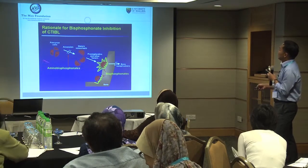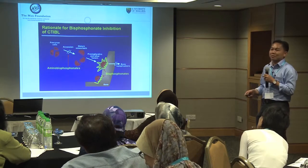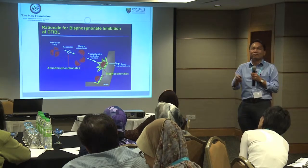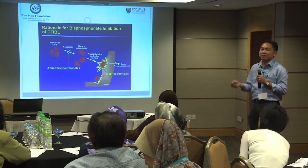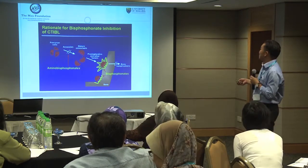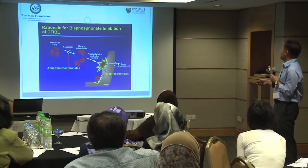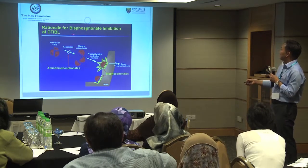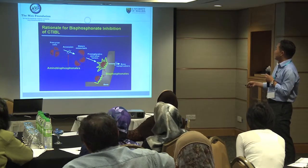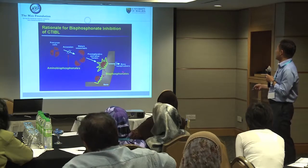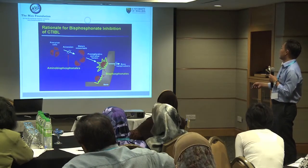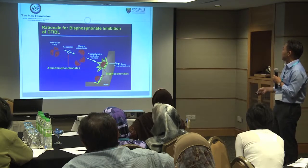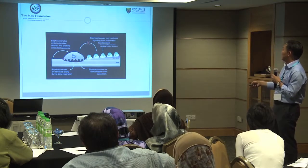Now we know the pathophysiology — therefore we know how to treat bony problems in multiple myeloma. There is a drug called bisphosphonate. We have many types: pamidronate, zoledronate, and many others. This drug inhibits the formation of mature osteoclasts so you don't have too much osteoclast activity, and at the same time bisphosphonate can also inhibit the activity of mature osteoclasts so they won't remove bone from your body.